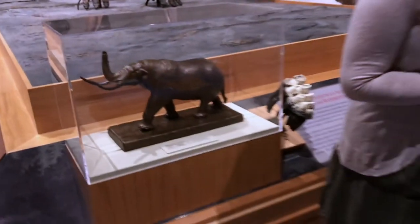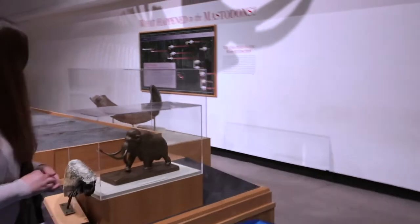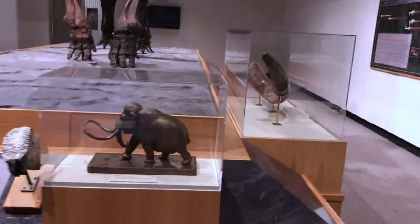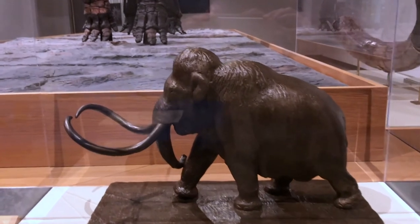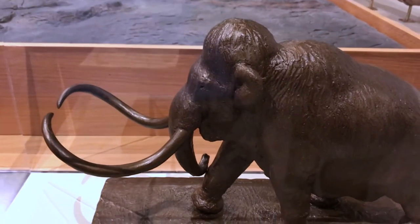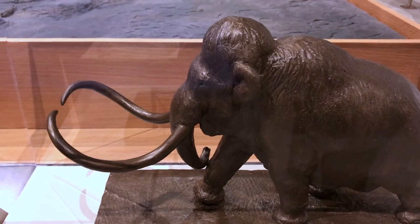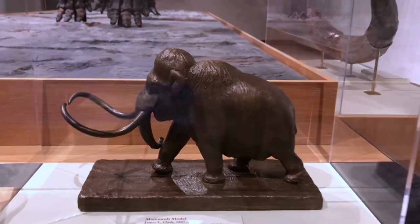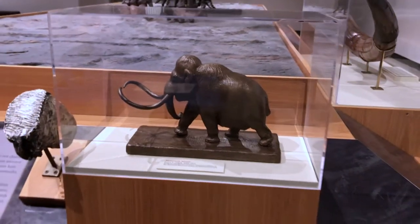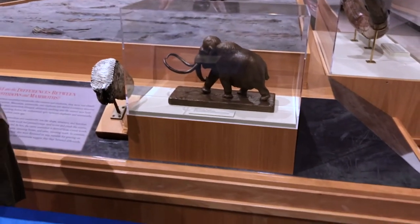And if we come over here and take a look at the mammoth model, you can see that the mammoth has this big bump on the top of its head and also on its back behind its head. So again, if it's got a flat head, you know it's a mastodon. If it's got that bump, it's a mammoth. Also you can see that the mammoth tusks are longer, thinner, and have a little more curve to them.